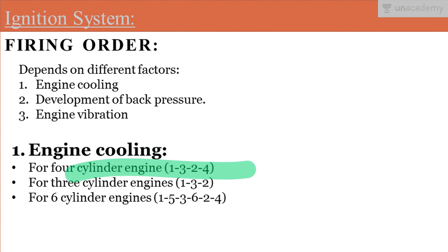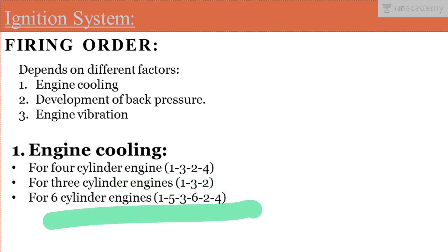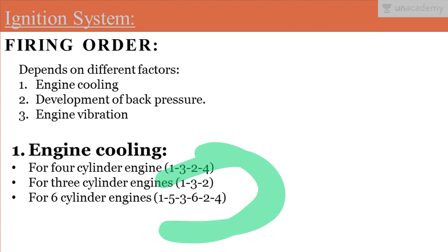The firing order should be in an alternate way. For a 4-cylinder engine it is 1, 3, 2, 4; for a 3-cylinder engine it is 1, 3, 2; and for a 6-cylinder engine there is a corresponding alternate order. With such a firing order, the cooling system of the engine will not be adversely affected.